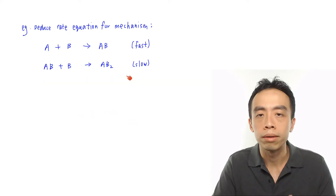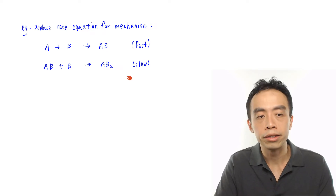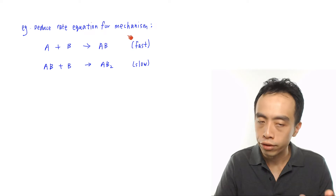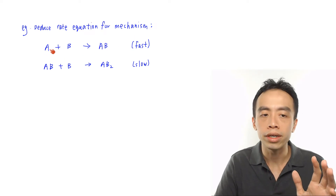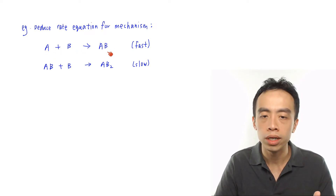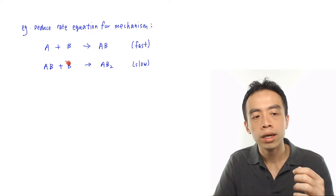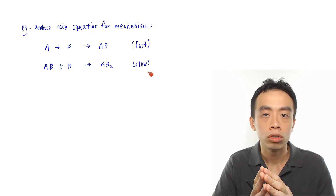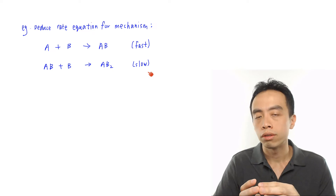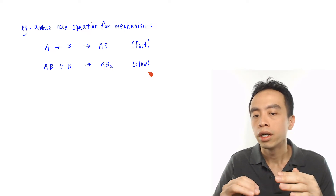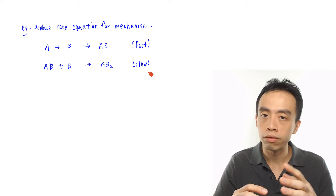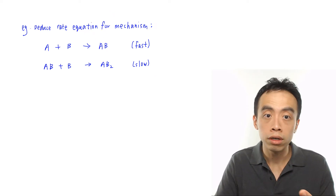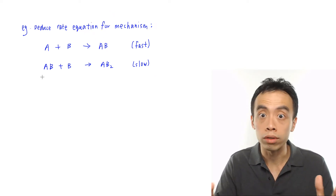Now let's have another example with a different mechanism. We want to determine the rate equation for this mechanism. We have A plus B gives AB — the first step is fast. Then AB plus B gives AB₂ — the second step is slow. What is different here is that the second step is slow, whereas in the previous example the first step was slow. First, we need to write out the overall equation.